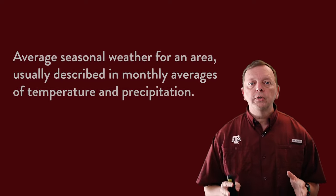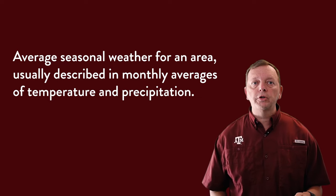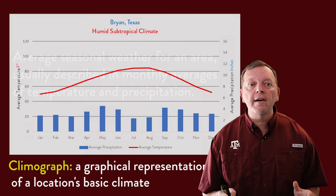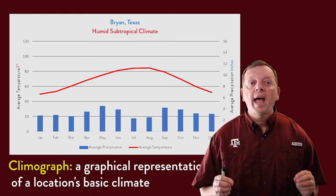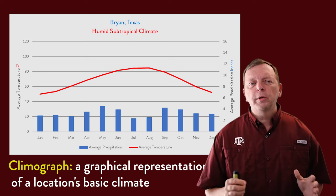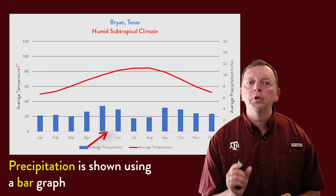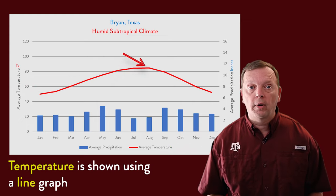As we have earlier covered, climate is the average seasonal weather for an entire area, usually described in monthly averages of temperature and precipitation. We can chart a climate using a special type of graph called the Climograph. This type of graph shows the entire year's average precipitation and temperature. Precipitation is always going to be graphed using a bar graph, and temperature is going to be using a line graph.